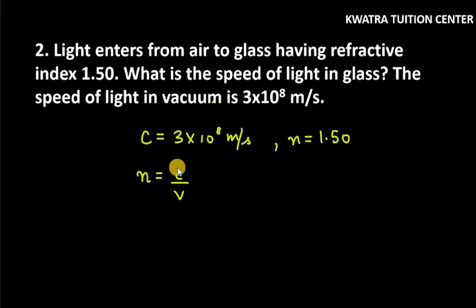So here n is given. You have to find the value for v. So n is 1.50, c is 3×10^8, v is unknown to us. So you have to use cross multiplication here.